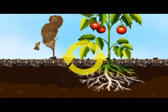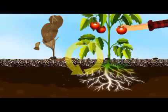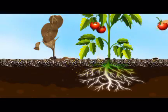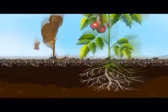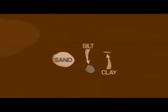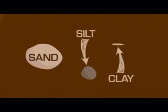We humans remove nutrients from this cycle when we take food from our fields, but these are easily replenished when microorganisms harvest nutrients from the parent material — the rocks and pebbles, and the much smaller particles such as sand, silts, and clays.